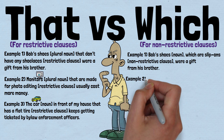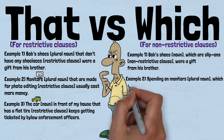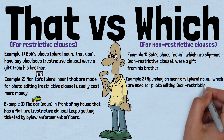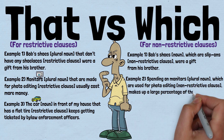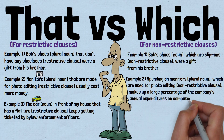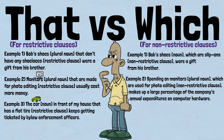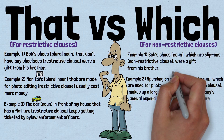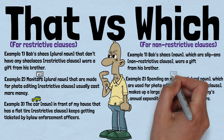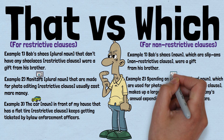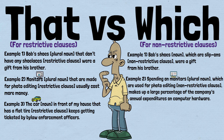Example 2: 'Spending on monitors, which are used for photo editing, makes up a large percentage of the company's annual expenditures on computer hardware.' Once again, we don't need the information about the monitors being used for photo editing to understand the rest of the sentence. We could leave out the non-restrictive clause and still understand the intent of the speaker or writer: 'Spending on monitors makes up a large percentage of the company's annual expenditures on computer hardware.' The information about the monitors being used for photo editing is simply additional information, which is unrelated to the other meaning being communicated.